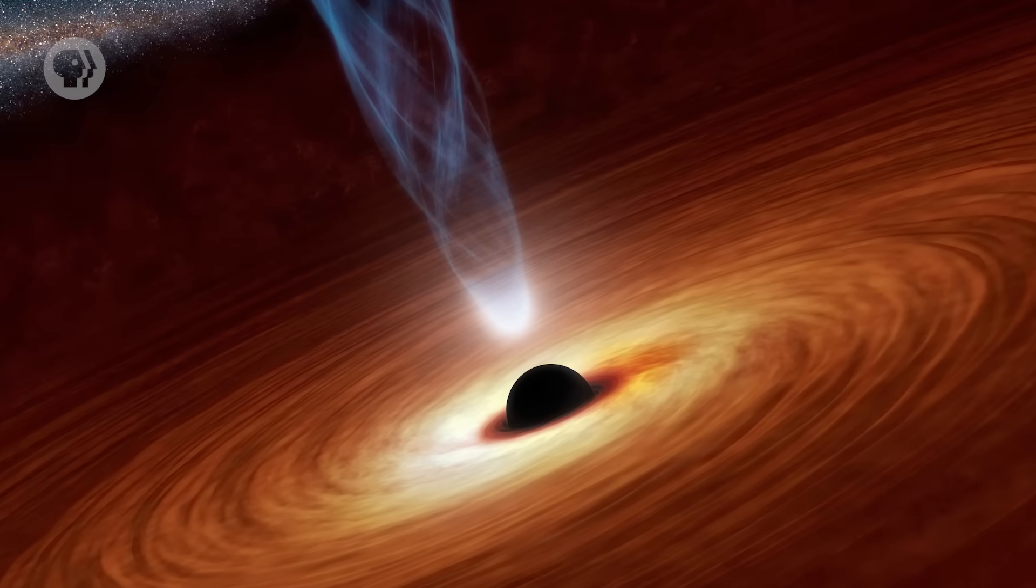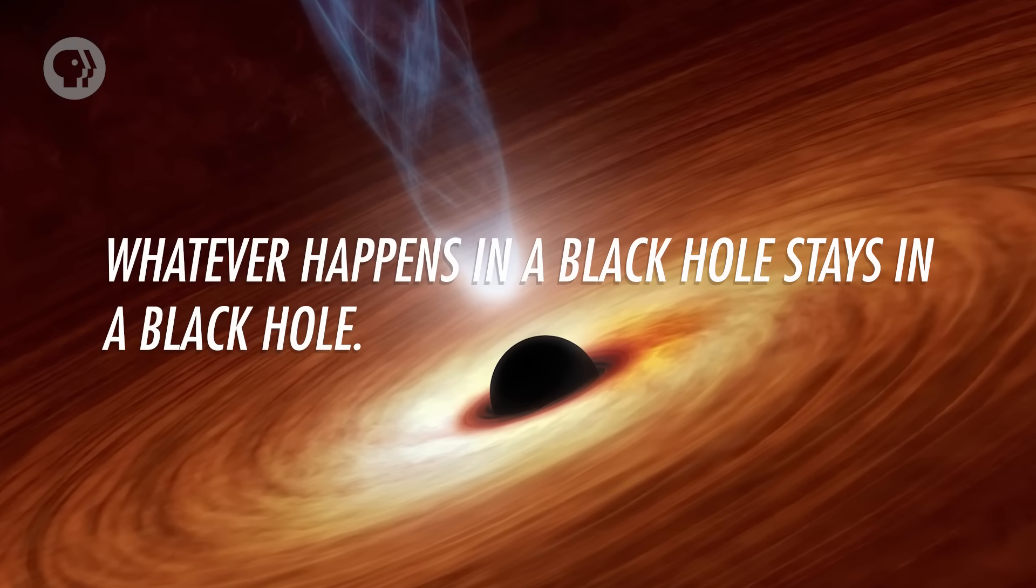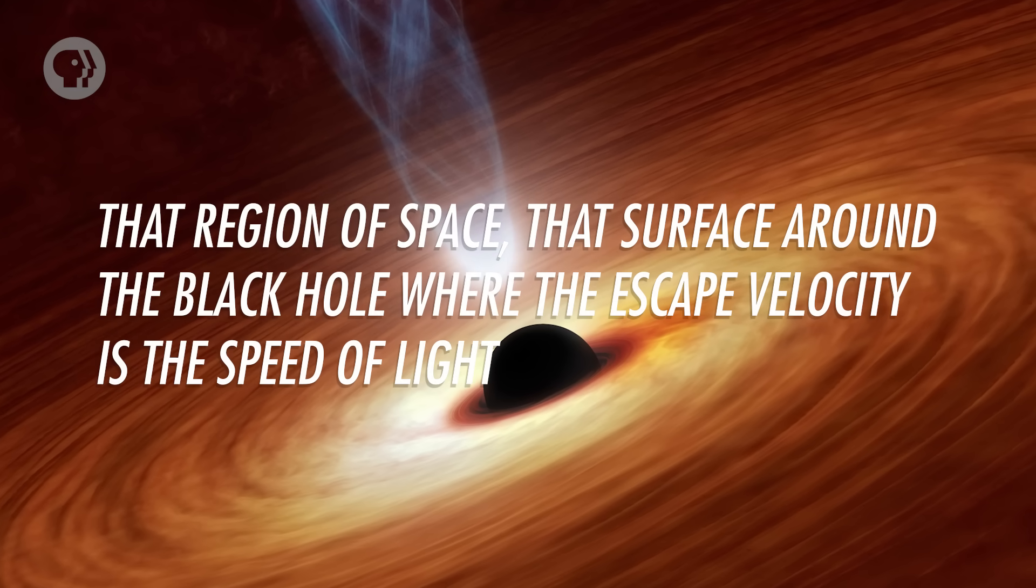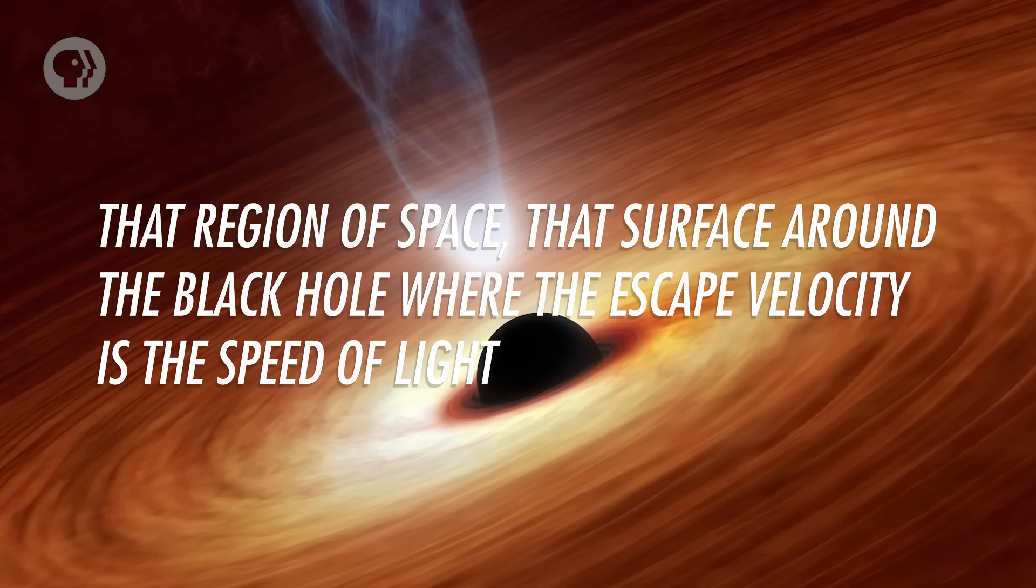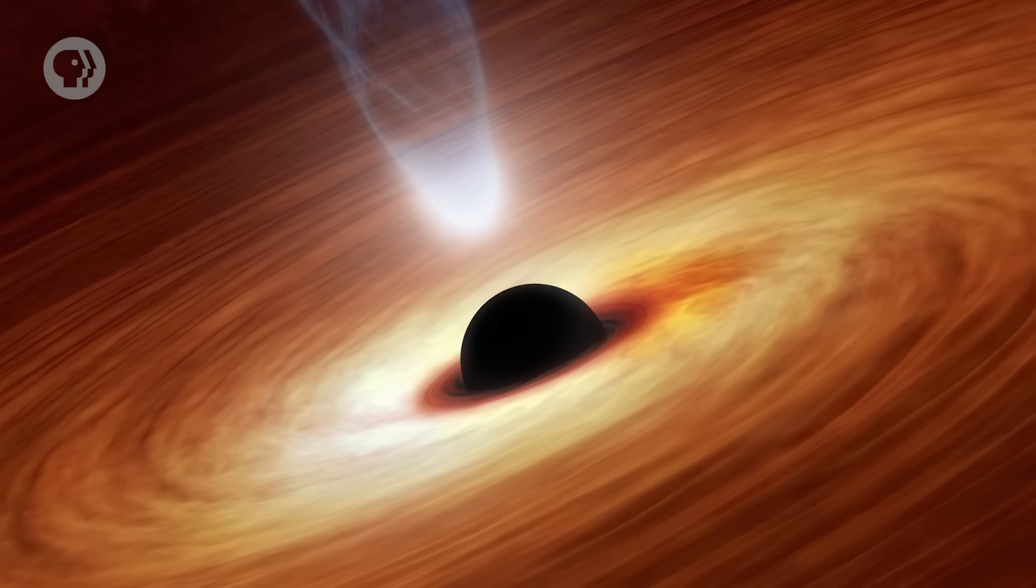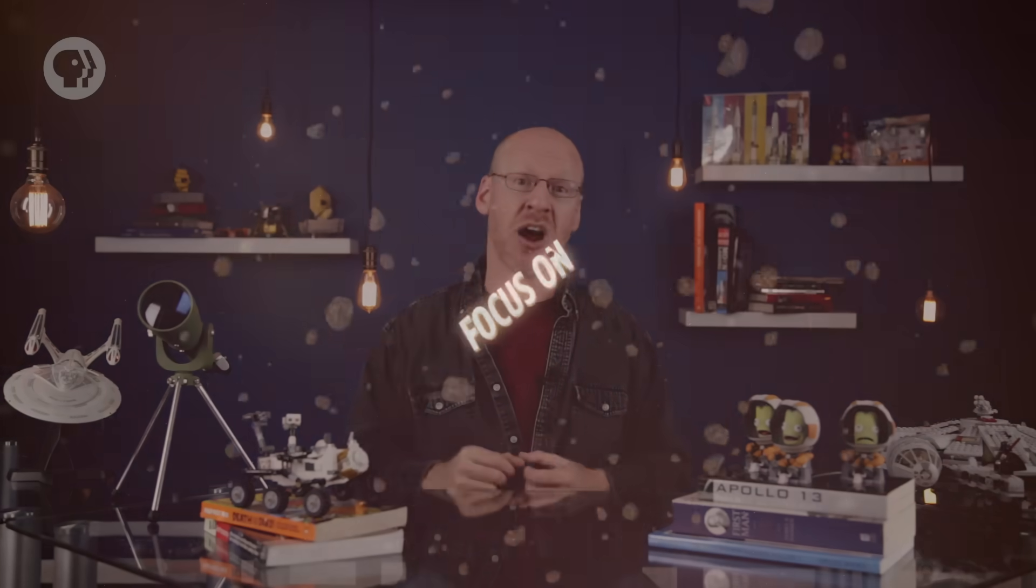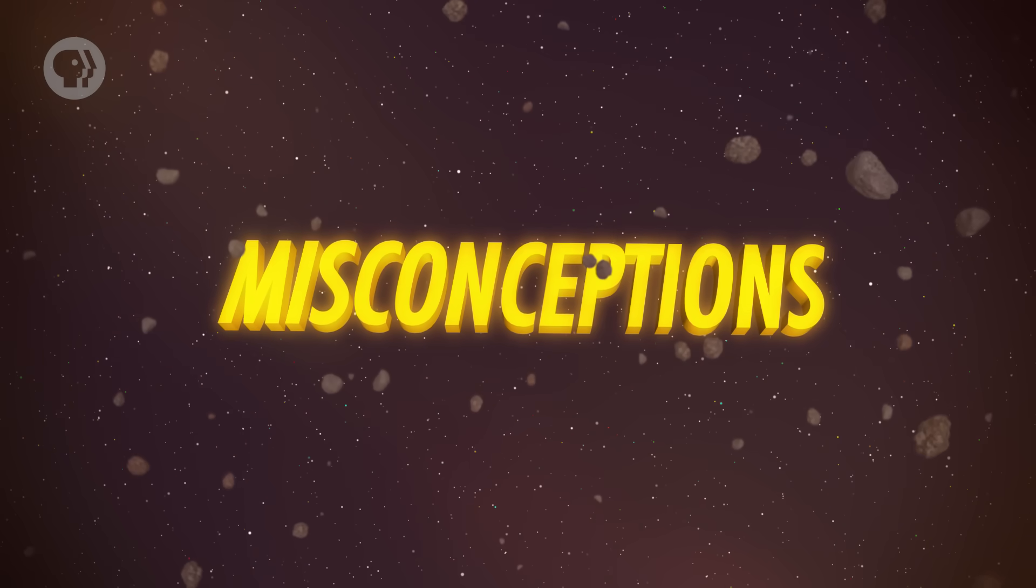A black hole is the ultimate end state for the core of a high mass star. Whatever happens in a black hole stays in a black hole. That region of space, that surface around the black hole where the escape velocity is the speed of light, is called the event horizon for that reason. Any event that happens inside can't be known. It's beyond the horizon for us. Black holes mess with our concepts of space and time. The math and physics of black holes is incredibly complex, so much so that even after several decades of study, physicists still argue over a lot of their properties. This has led to a lot of misconceptions about them too.